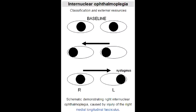What is the cause of internuclear ophthalmoplegia? The cause of internuclear ophthalmoplegia is damage to the medial longitudinal fasciculus.